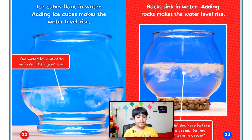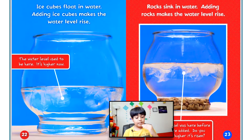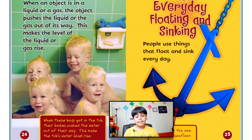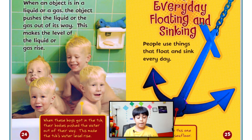Rocks sink in water, and adding rocks makes the water level rise. The water level was lower before the rocks were added — do you see how much higher it's risen? When an object is in a liquid or a gas, the object pushes the liquid or gas out of its way, making the level rise. When these boys got in the tub, their bodies pushed the water out of their way and made the tub's water level rise higher.